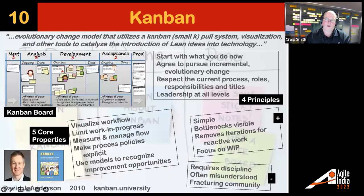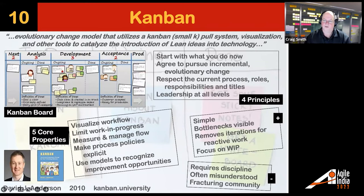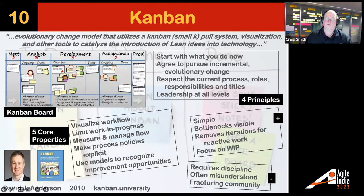Kanban is also at the lean roots. A lot of people only ever stop at the first core property — visualizing the workflow. But to truly do the Kanban approach, you also need to limit your work in progress, measure and manage your flow by looking at cycle time, make your process policies explicit, and use models to recognize improvement opportunities. It's based on four principles: start where you are, look for evolutionary change, respect the process, and everybody is a leader. Kanban does require a lot of discipline.